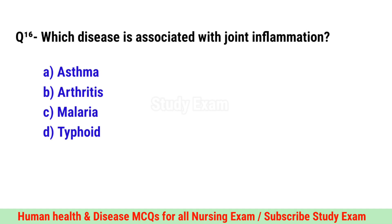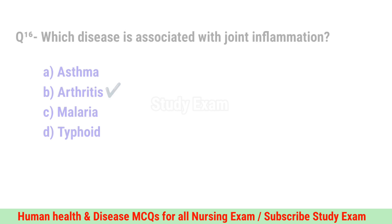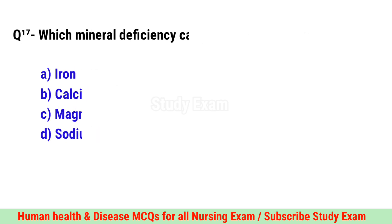Question No. 16. Which disease is associated with joint inflammation? Correct option is B. Arthritis.